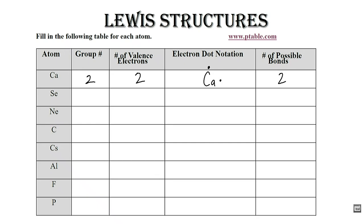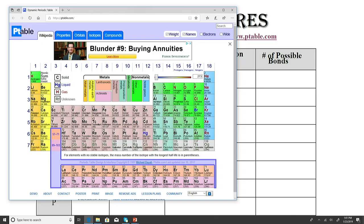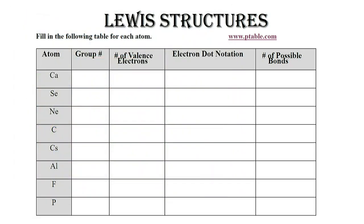Let's take a look at selenium. Selenium is here in group six. This periodic table lists them as one through eighteen, but if you remember the Roman numeral numbering system, this is one A, two A, three A, four A, five A, six A, seven A, eight A, which is why I'm calling it groups one through eight. So selenium is in group six A.